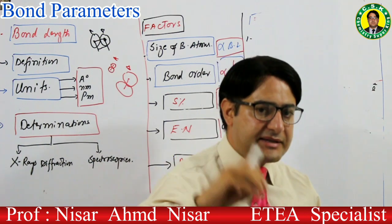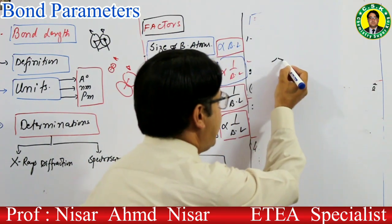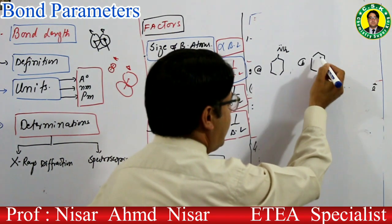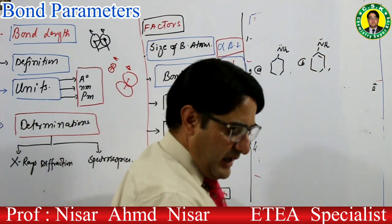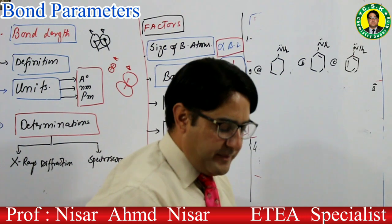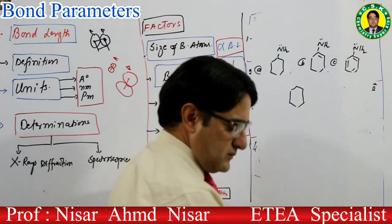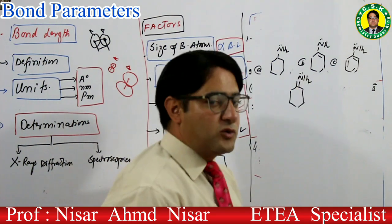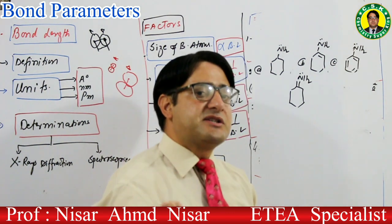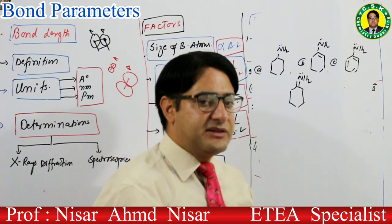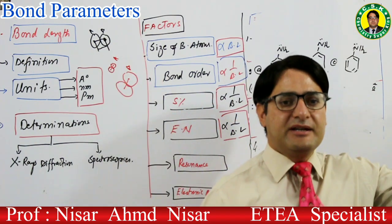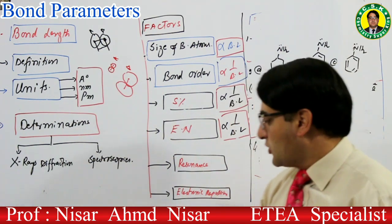ایک اور MCQ: which of the following has highest N=O bond length؟ Options: (1) NO3⁻، (2) NO2⁺، (3) NO2⁻۔ آپ نے lowest bond length اور correct increasing order بھی بتانی ہے۔ یہ question اس technique پہ آپ نے خود solve کرنا ہے۔